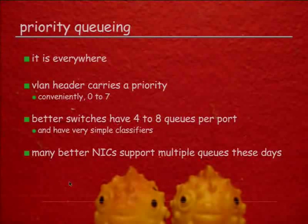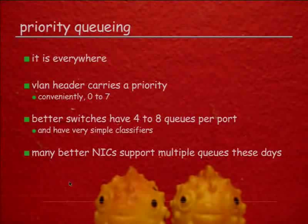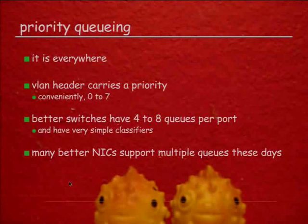Priority queuing really is everywhere. The VLAN header has a priority field with eight priority levels, pretty much as everywhere. Each and every better switch has four or eight queues per interface with very simple, limited classifiers. Many of the better network interface cards also have multiple send and receive queues these days, and it would be nice to be able to use that.